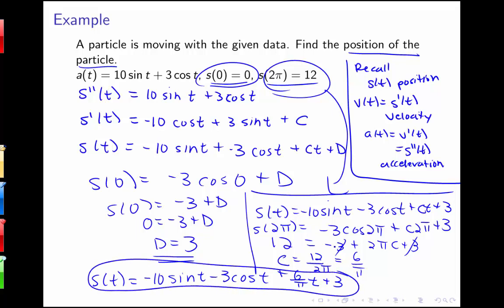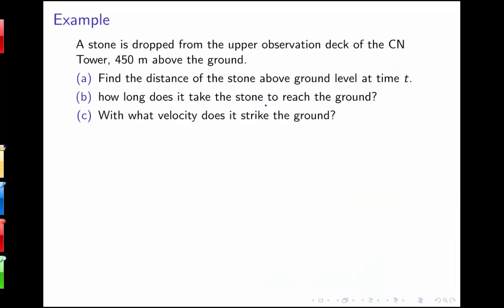So we get this final position function by finding multiple antiderivatives and using additional information to solve for our constants to get a unique answer. Now we'll look at a word problem involving distances and velocities. A stone is dropped from the upper observation deck of a tower 450 meters above the ground, and we want to find the distance of the stone above the ground at time t.